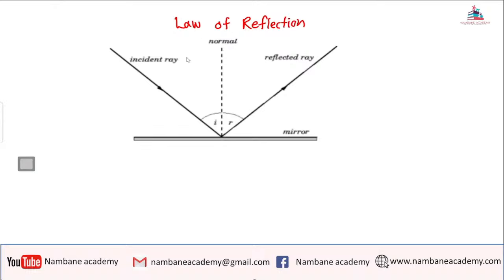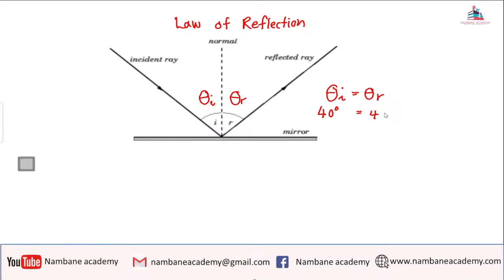When it comes to reflection itself, you have your normal, your incident ray, and your reflected ray. What people confuse is where's the position of the angle. The angle of incidence is between the normal and the ray, and the angle of reflection is between the normal and the reflected ray. The law of reflection says that these two angles are equal to each other — the angle of incidence and the angle of reflection. So if the angle of incidence is 40 degrees, the angle of reflection will also be 40. If the angle of incidence increases, the angle of reflection will also increase, and vice versa.